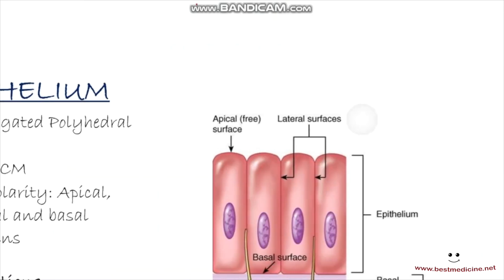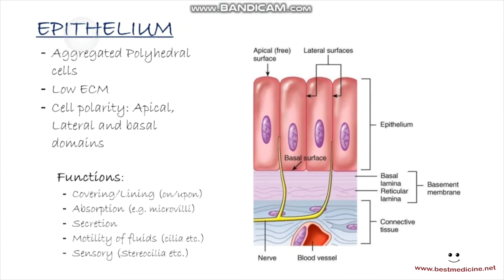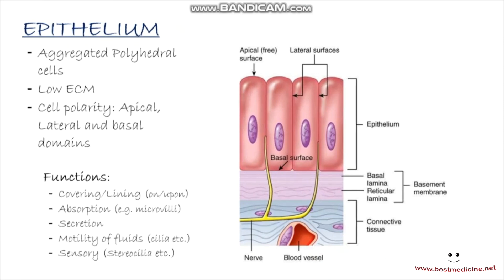All right, so let's go ahead and see what we have learned in our neat notes. So here's the epithelium. And what we have learned so far is that epithelium or epithelial tissue consists of aggregated polyhedral cells. It has a low extracellular matrix and it shows cell polarity, so it has this apical, lateral, and basal domains. Some of the functions that epithelial tissue performs is covering or lining, absorption, secretion, motility of fluids, sensory, and so on. We'll study all of these in detail when we get to those specific chapters as well.